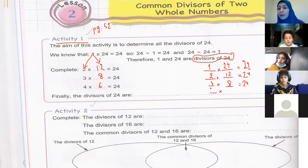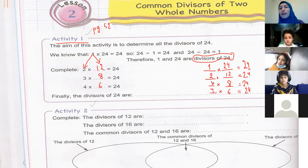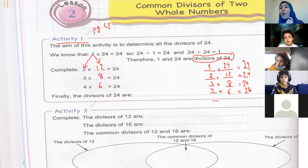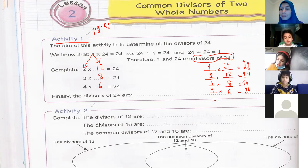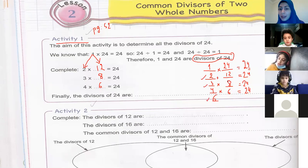Four times which number equals 24? Excellent — that's one, two, three, four done. Now, is 24 divisible by five? No, because it doesn't end in zero or five, so I skip five. Now six — is 24 in the six times table? Yes, because it's divisible by both two and three, so it's definitely divisible by six. Six times which number equals 24? Four.